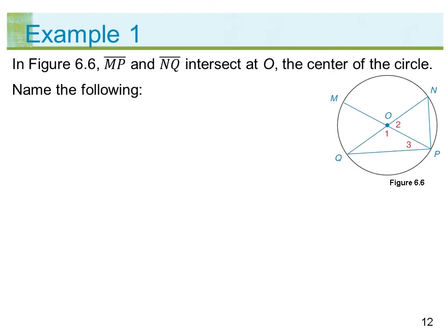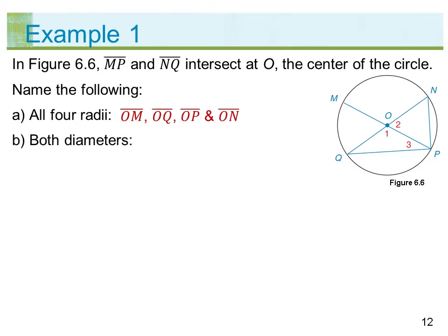In figure 6.6, segment MP and segment NQ intersect at O, the center of the circle. Name the following: A) All four radii: segments OM, OQ, OP, and ON. B) Both diameters: segment MP and segment QN.